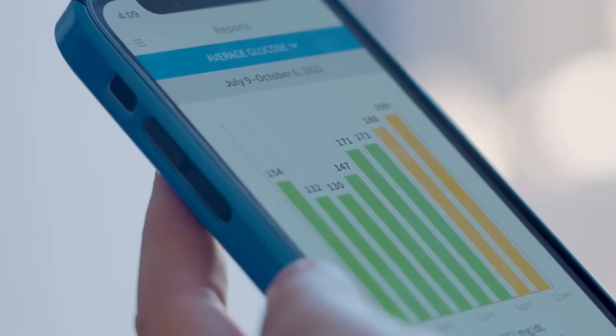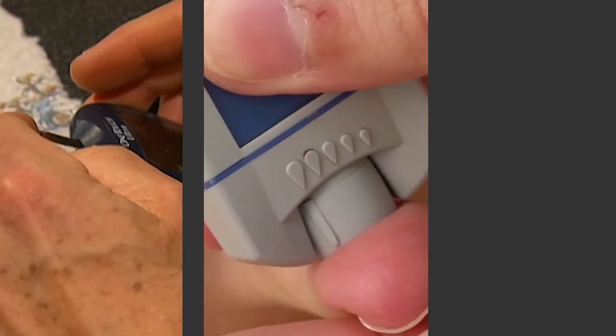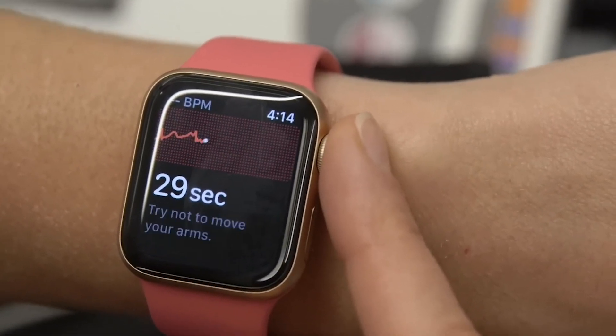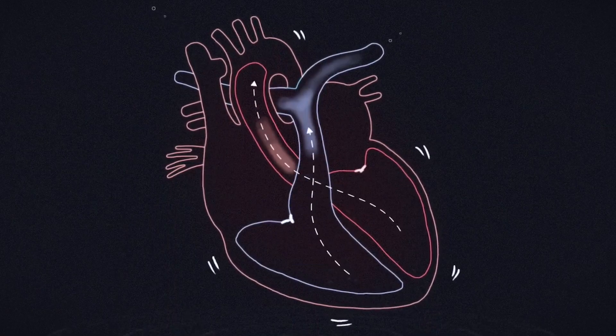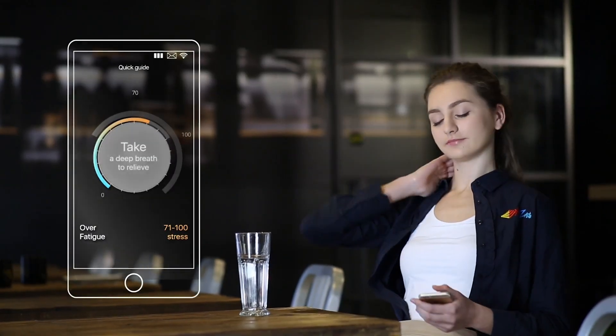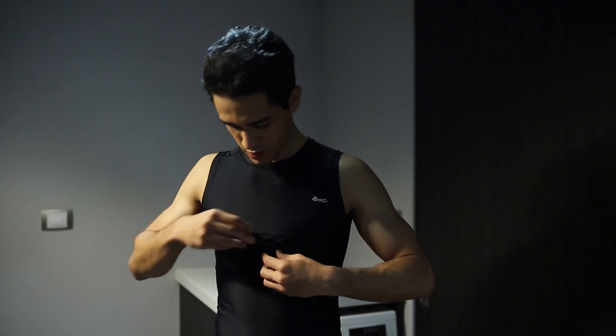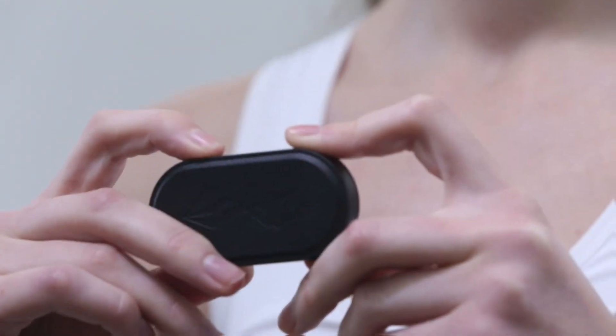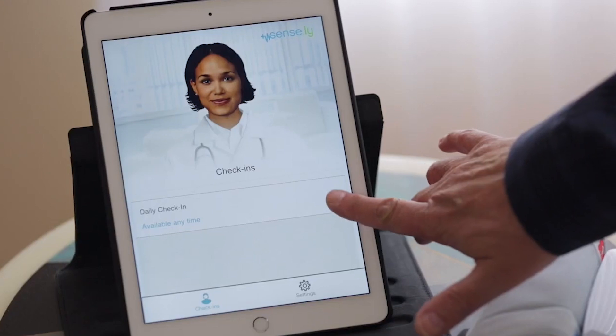For millions of people, this technology is already making a difference. Continuous glucose monitors help diabetics maintain stable blood sugar levels without the need for constant finger pricks. Smart ECG-equipped watches detect irregular heart rhythms, warning users of potential heart conditions before they become life-threatening. Even stress and fatigue levels can be monitored, helping people recognize and manage burnout before it affects their health.